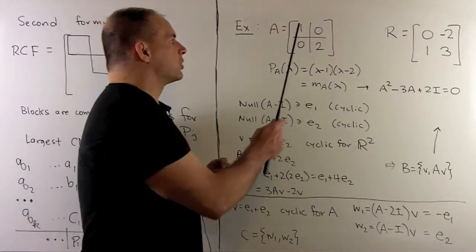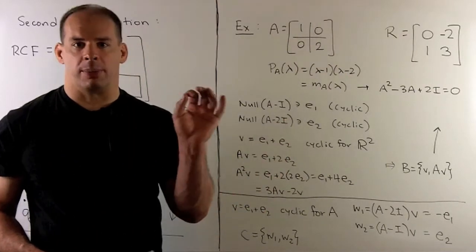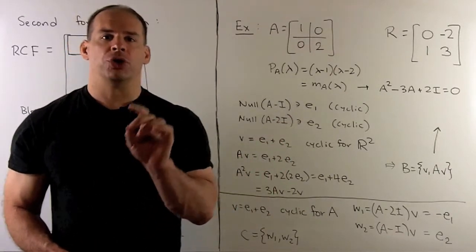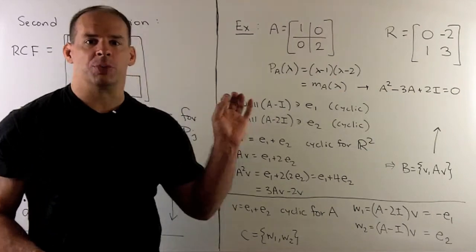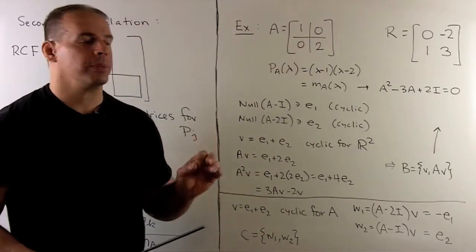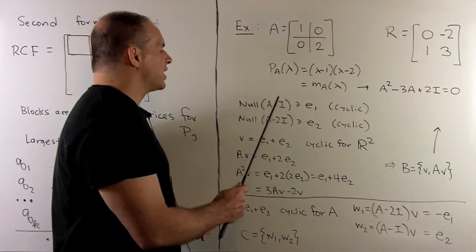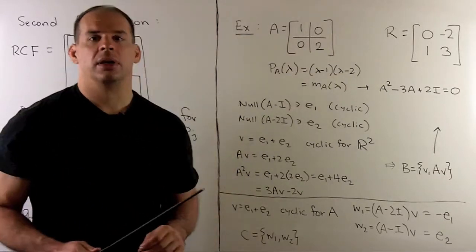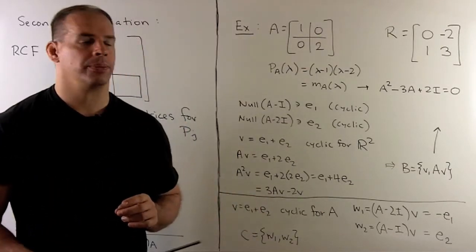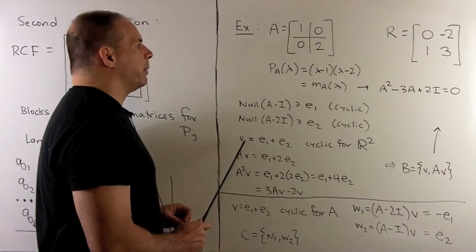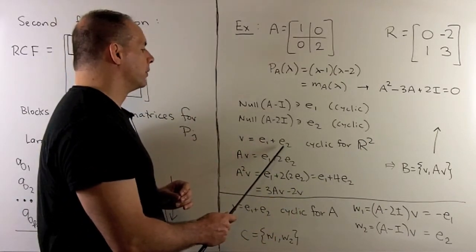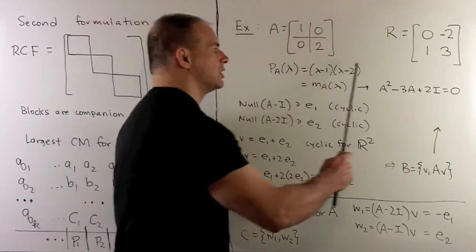Our recipe is to take cyclic vectors for each block, add them together, and they'll give us a cyclic vector for the single block. To find cyclic vectors for these blocks, we isolate those subspaces — the null spaces of q raised to its exponent. The irreducible factors λ−1 and λ−2 each have exponent one, so we look in the null spaces of A−I and A−2I. The easiest choices are e_1 and e_2, the standard basis vectors. The first vector for the basis of this block will be the cyclic vector e_1 + e_2.